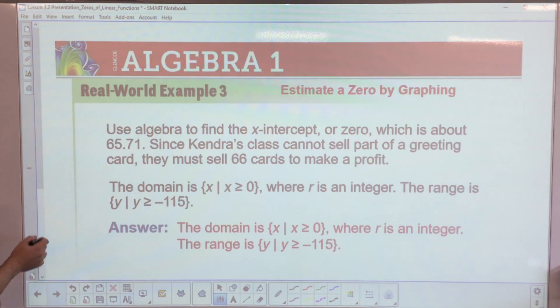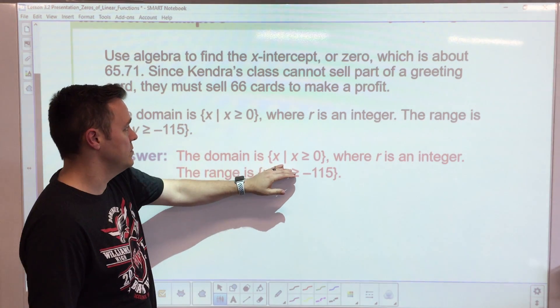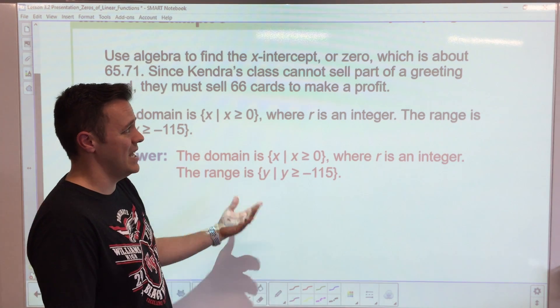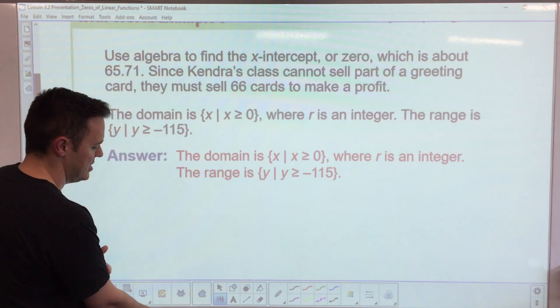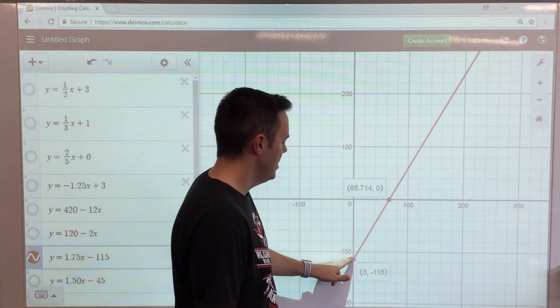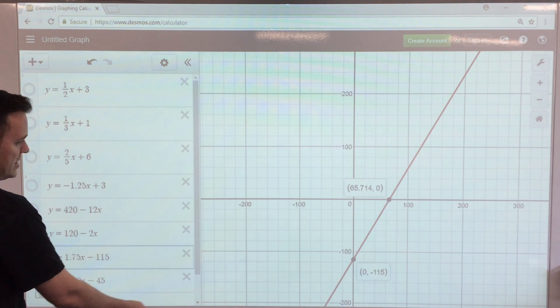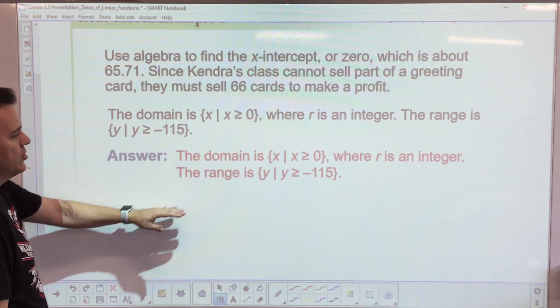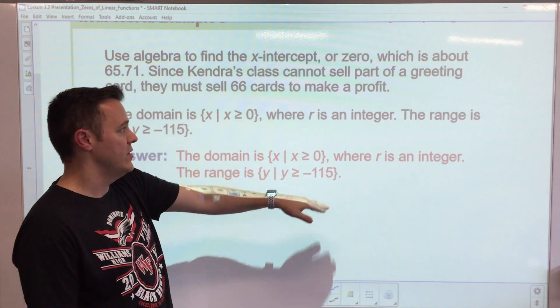This is how much money they've spent. As they sell these cards their profit starts to increase, but they don't actually break even or hit the zero until they hit 66. The domain of this would be zero to any number that is greater than zero, because they're going to sell cards - anything greater than zero is going to keep going up. The range of this function is it's going to start at negative $115, so the range is any y value greater than negative $115.